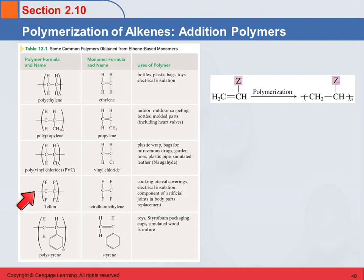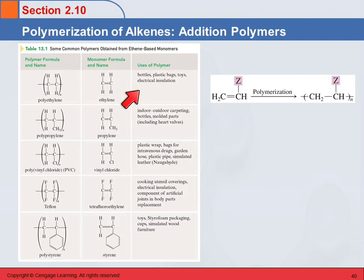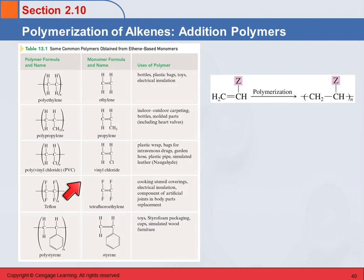Teflon is made from tetrafluoroethylene, so each carbon has two fluorines on it. And this is polystyrene. These polymers are used in things around your house: polyethylene is in bottles, bags, and toys; polypropylene is in heart valves and indoor-outdoor carpeting — it's a little weird to think the same stuff in carpeting is used in someone's heart. Plastic wrap, bags, garden hoses, cooking utensils. Teflon is the non-stick coating inside your frying pan. Polystyrene is that styrofoam packaging.